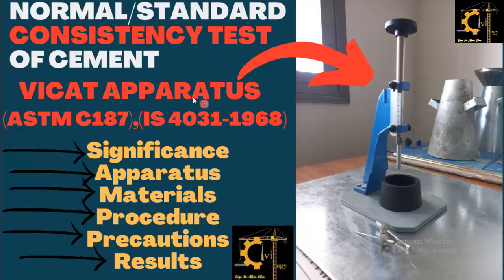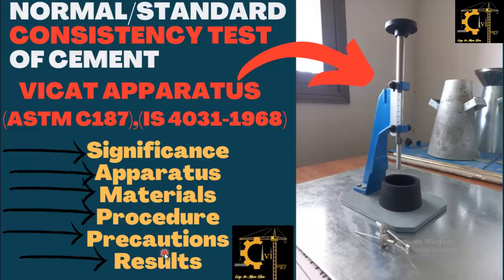But in this video, we will discuss the consistency test by following the standard procedure of ASTM C187, and we will also discuss it in the context of Indian Standard 4031-1968. We will discuss the significance of the normal or standard consistency test, the apparatus and materials used, the standard procedure, precautions, and the results and conclusion. So let's start our today's topic.